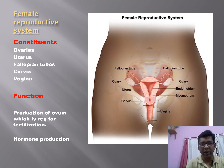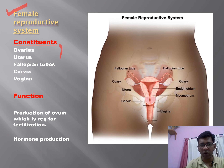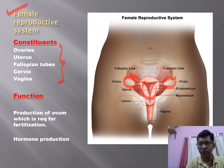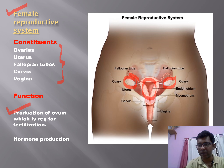The female reproductive system is associated with reproduction. Its constituents are the ovaries, uterus, fallopian tubes, cervix, and vagina. Two ovaries remain on either side, connected by the fallopian tubes, leading to the uterus, cervix, and vagina. Their functions are production of ovum required for fertilization — the ovum attaches with sperm to make a zygote from which birth happens — and hormone production.